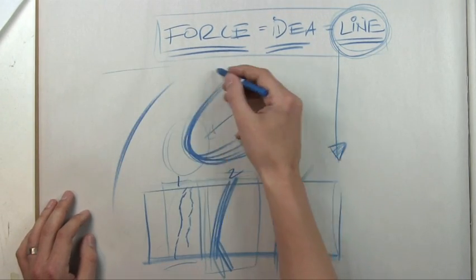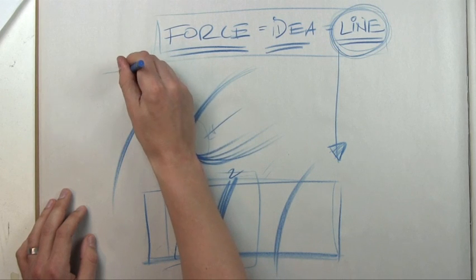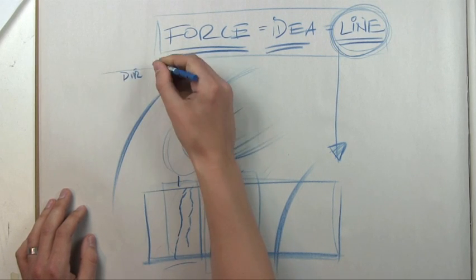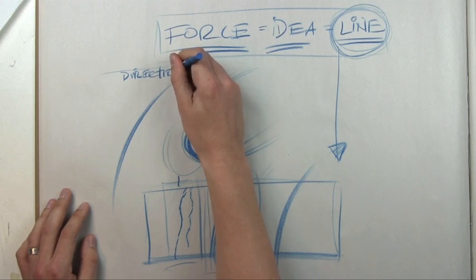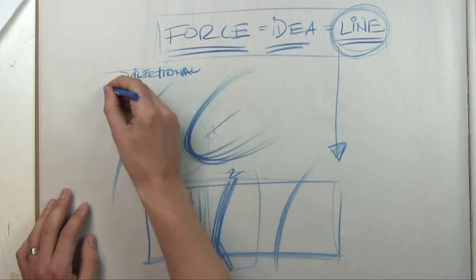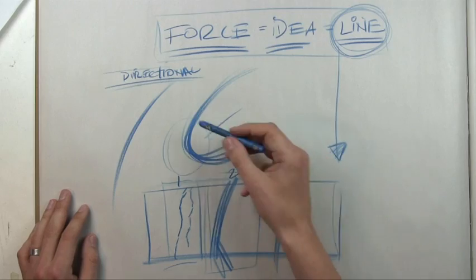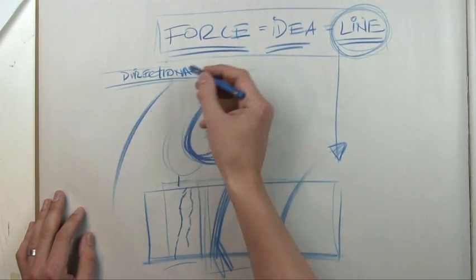So this first line, these lines that I just drew, these are lines I call them directional force. I write fast and then I end up skipping letters. So this directional force. Why is it called directional force?